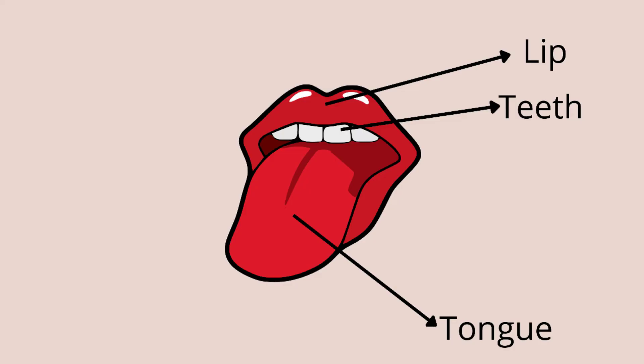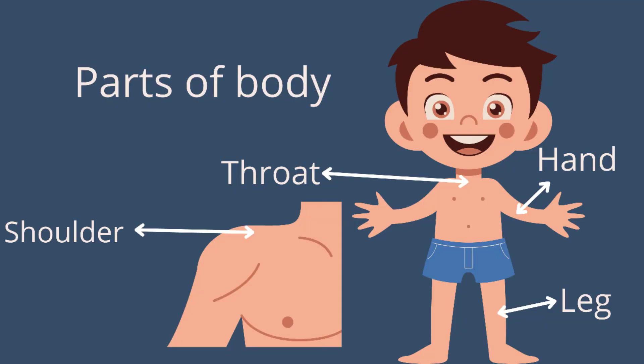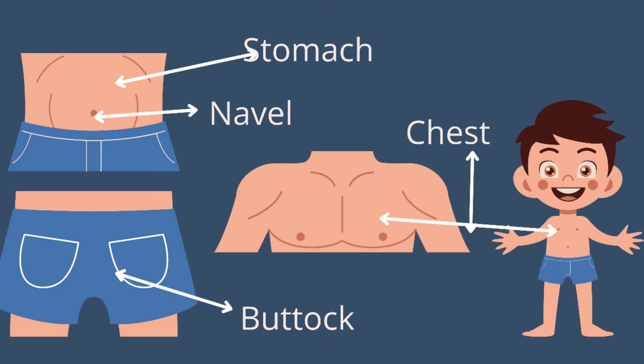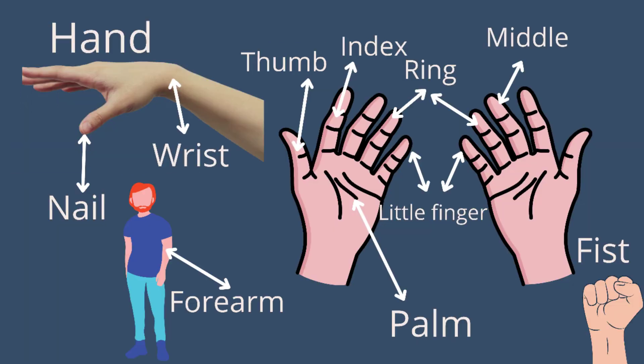Parts of mouth: lip, teeth, and tongue. Parts of body: throat, shoulder, hand, leg, stomach, navel, chest, buttock. Parts of hands: wrist, nail, forearm, thumb, index finger, ring finger, middle finger, little finger, palm, fist. These are the parts of the hand.